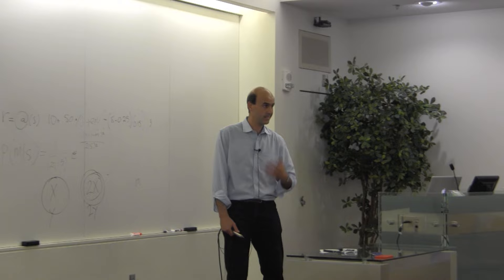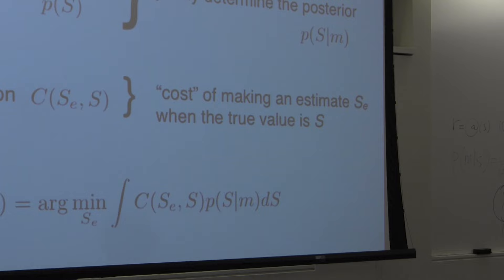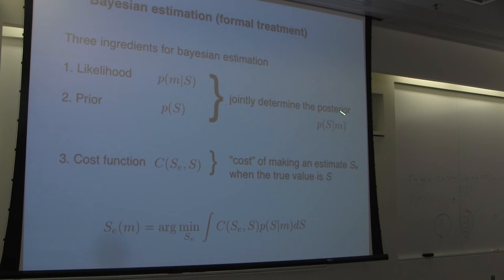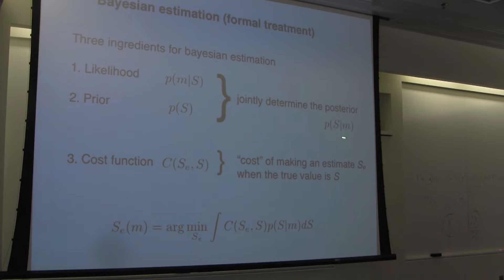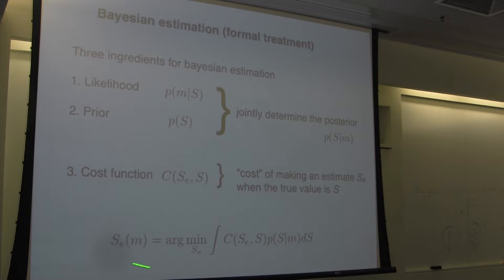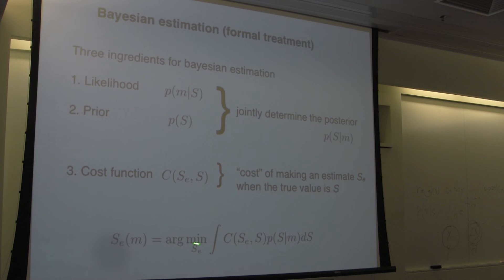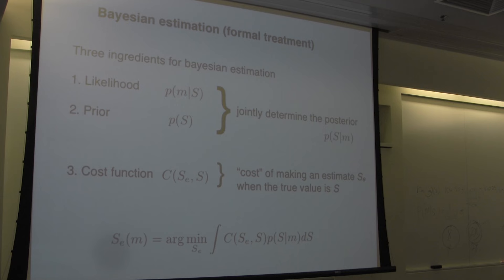Formally then, what we want to do is find this posterior and say: over this posterior, I want to go for the estimate S_e that over all possible S's will minimize this cost. I'm going to average across all possible S's, and for each S compute the cost, then go with the S that on average makes the minimum cost or maximum reward. That's what the Bayesian estimator is — that's what this little piece of math tells you.